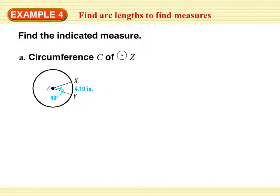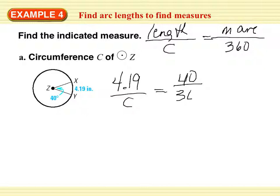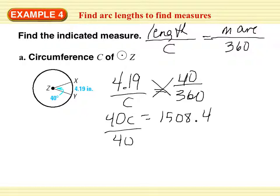Find the indicated measure — we're trying to find the circumference of circle Z. Length over circumference equals measurement of the arc over 360. We know the arc length is 4.19, we're trying to find the circumference. The central angle is 40 degrees, so the arc is also 40 degrees. Cross multiply: 40 times C equals 4.19 times 360. Divide both sides by 40 — C equals 37.71 inches.